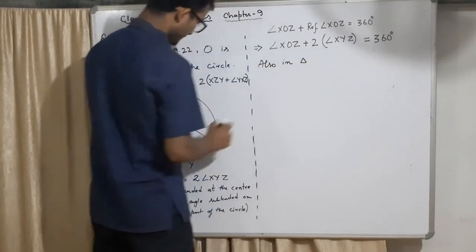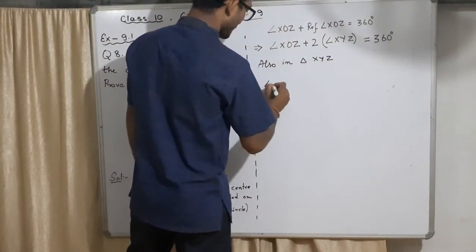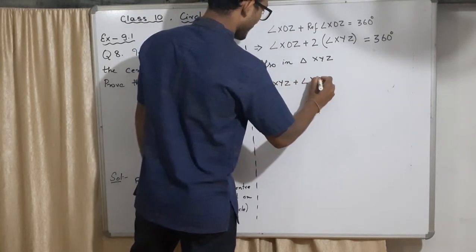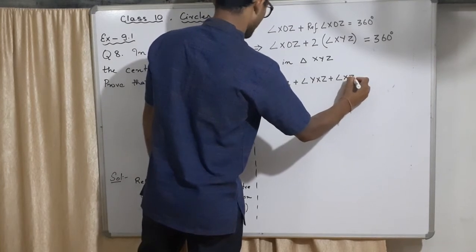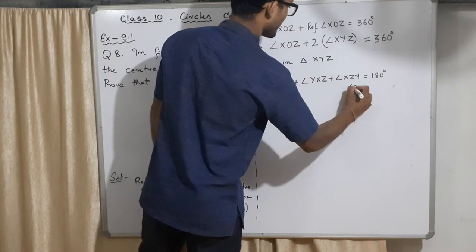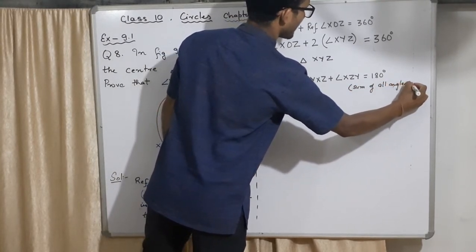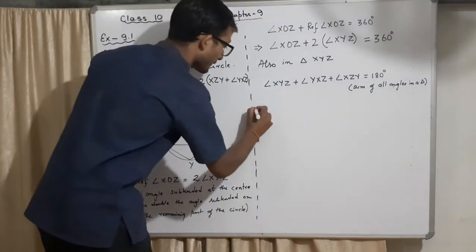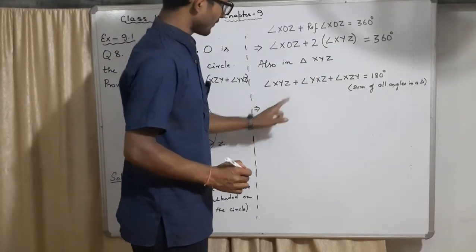In triangle XYZ, ∠XYZ plus ∠YXZ plus ∠XZY equal to 180 degrees. The reason is sum of all angles in a triangle. This gives you - I want to replace XYZ, so what I will do is I will find it.